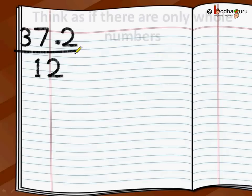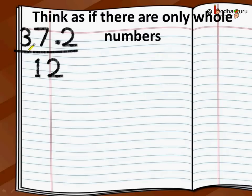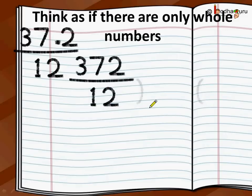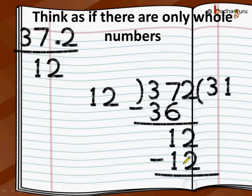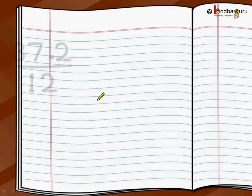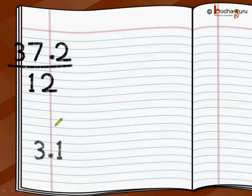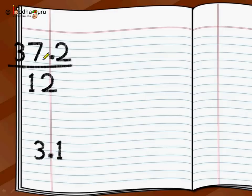First, do it like whole numbers — the divisor doesn't have a decimal point. So we do 372 divided by 12. 12 threes are 36; 37 minus 36 is 1. Bring 2 down — 12. 12 ones are 12. So the answer of the first step is 31. Then in the second step we add the decimal point in the answer at the same position as in the dividend, which has one digit after the decimal point. So 31 becomes 3.1. The answer of 3.72 divided by 1.2 is 3.1.